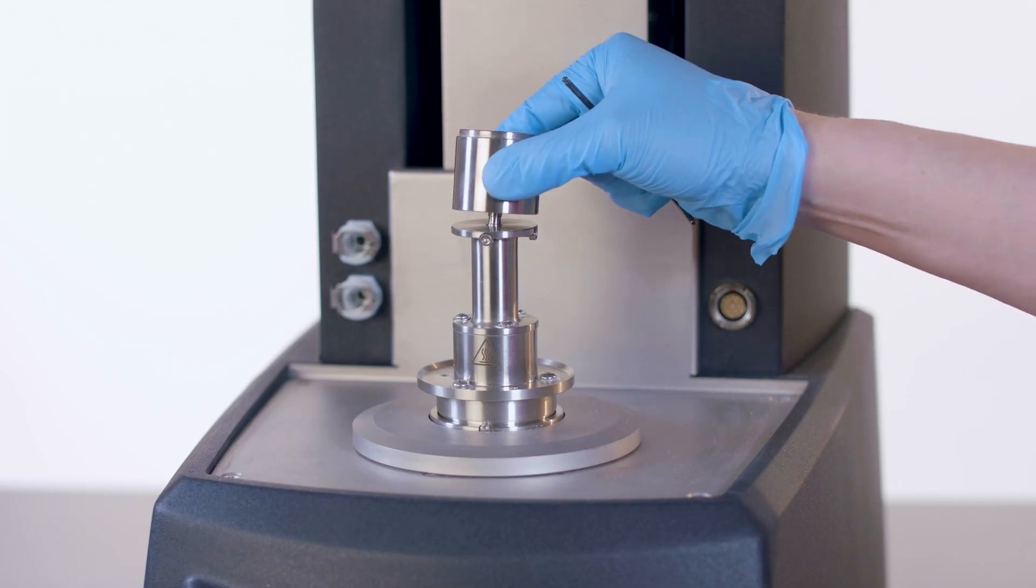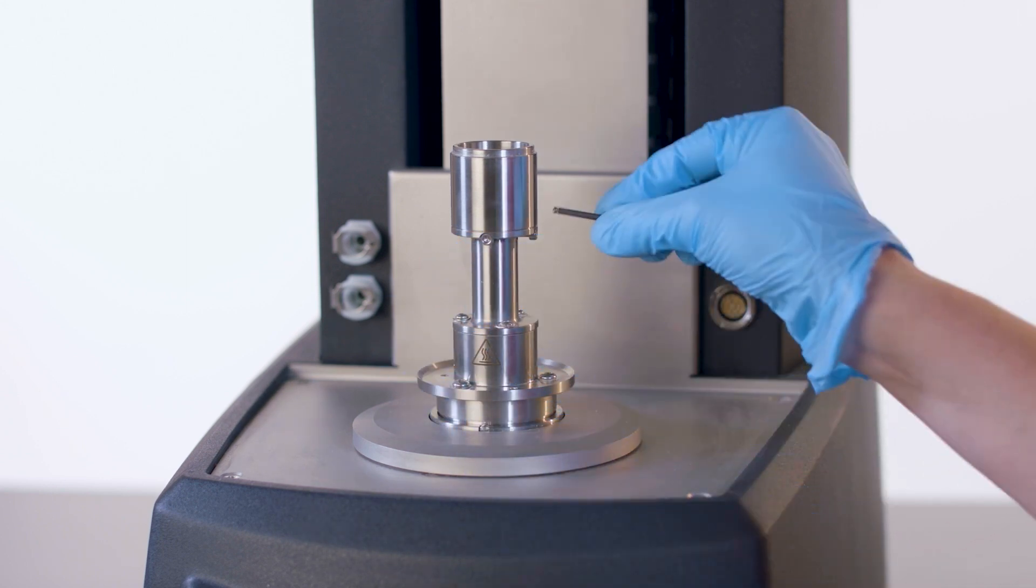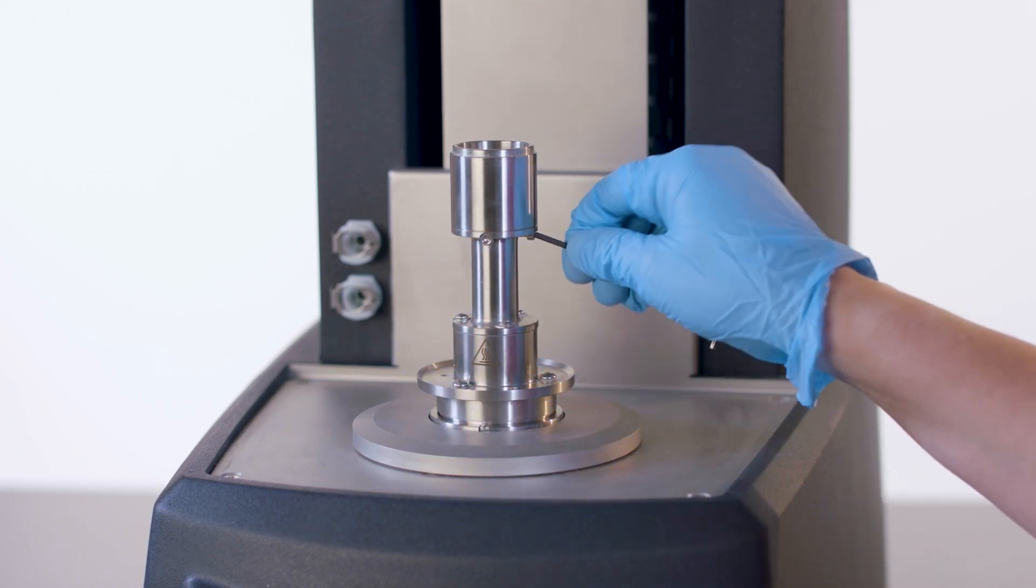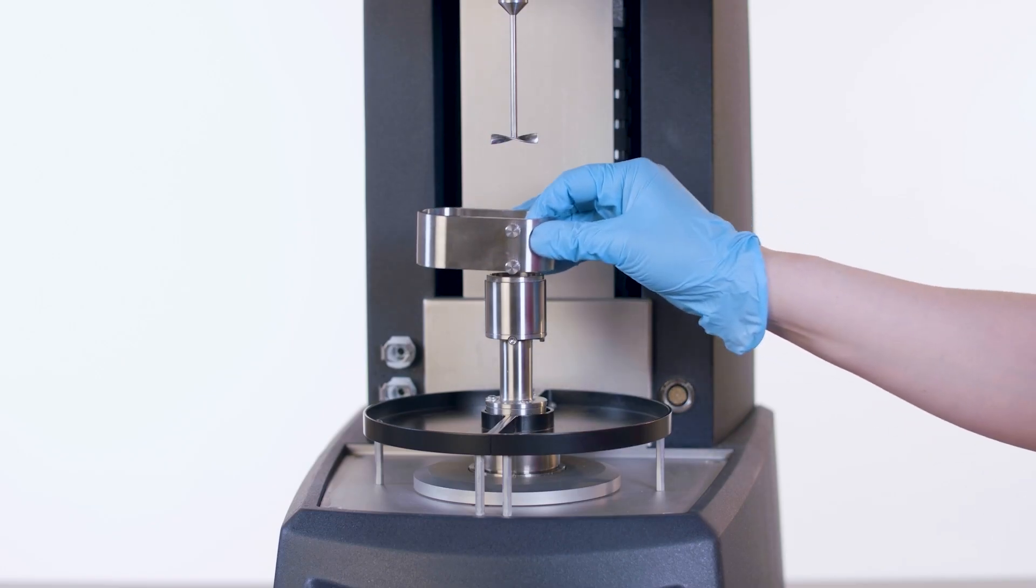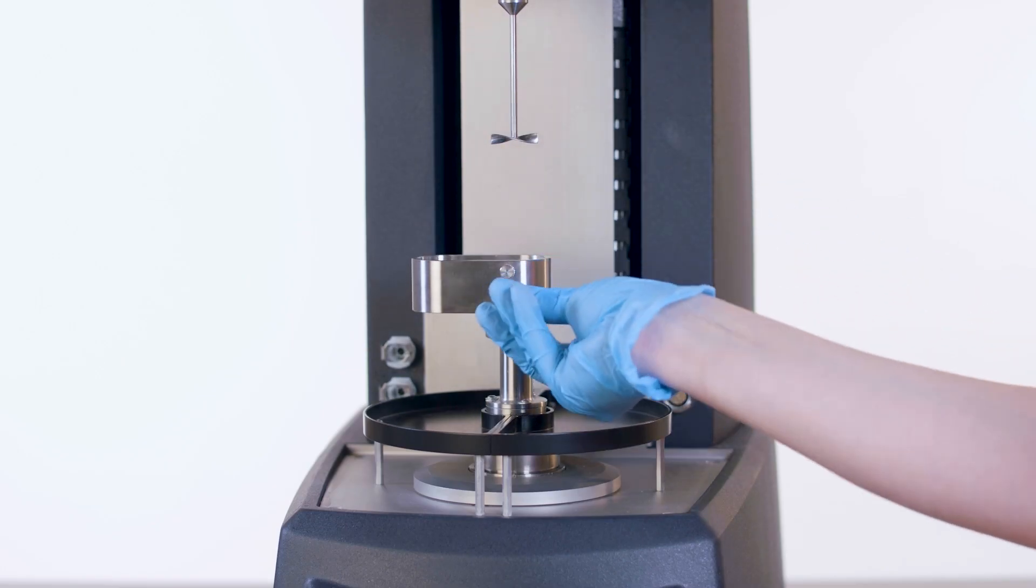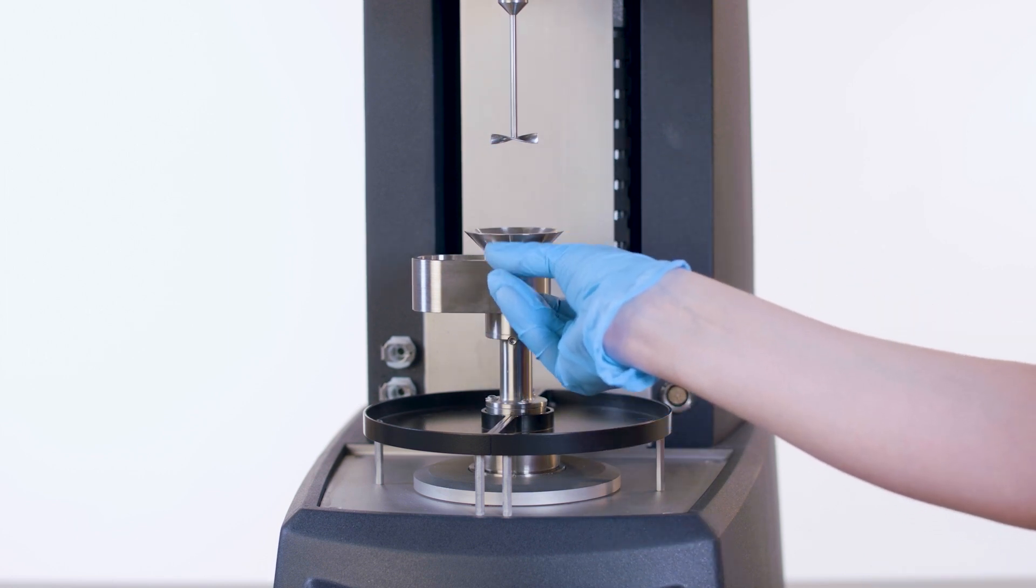The flow cell cup is secured to the pedestal with two set screws. The trim slide is placed over the cup and tightened with the bottom thumb screw. The trim funnel is then placed flush with the trim slide and secured with the top thumb screw.